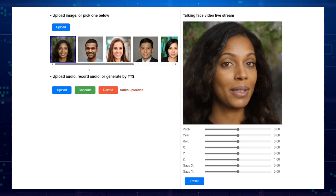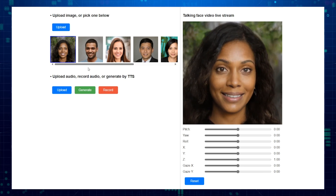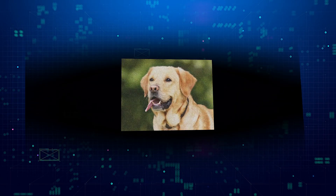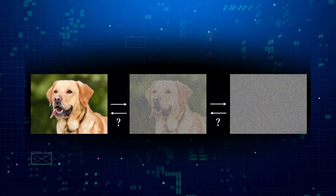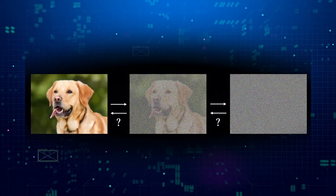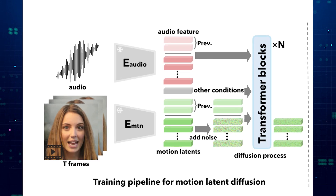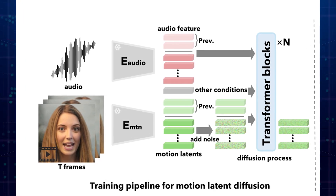The secret sauce is a special kind of code. VESA uses a special type of code called a diffusion model. Imagine you have a blurry picture of someone's face — a diffusion model is like a program that can take that blurry picture and slowly sharpen it up, revealing more and more detail until you have a clear image. In VESA's case, the diffusion model uses the audio recording to gradually add details to the face, like lip movements, expressions, and head movements, all while keeping it in sync with the sound.